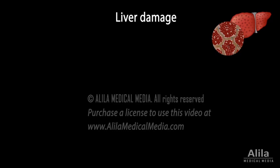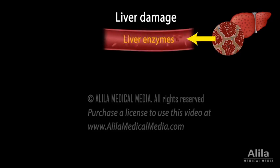When liver cells are injured, their content, including liver enzymes, are leaked into the bloodstream. The levels of these enzymes can be measured to assess the extent of liver damage. The higher their levels in the blood, the greater the extent of liver damage. However, because some of these enzymes are also present in other tissues, abnormal results may be due to causes outside the liver.